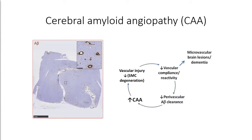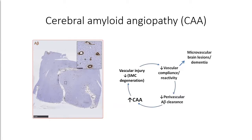As a conceptual framework for this talk, we propose a mechanism where increased CAA — increased amyloid buildup in vessel walls — leads to loss of smooth muscle cells, increased vascular injury, and reduced vascular compliance and reactivity. Reduced vessel function may then impair perivascular clearance of amyloid beta, since we believe clearance alongside the vasculature helps rid the brain of amyloid. When vessels get very stiff due to amyloid deposition, clearance is also reduced, feeding a forward loop of increased pathology, further reduced vessel function, and accumulating amyloid. This eventually leads to microvascular brain lesions such as bleeds and infarcts, as well as dementia.